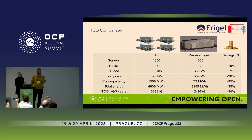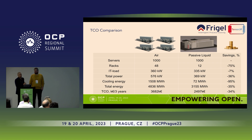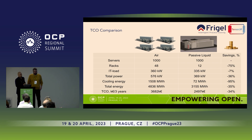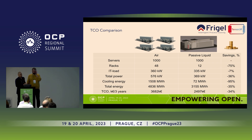Now we can make a comparison: 1,000 servers air-cooled versus 1,000 servers liquid-cooled. In the first case, we need four modular data centers; in the second case with liquid cooling, we need just one. So fewer racks, less IT load because less fan work is needed. Total power is reduced by 36%, requiring less UPS, fewer gensets, fewer transformers, and less energy equipment. Cooling energy is reduced by 95%, and overall total energy is reduced by 35%. Over three years, CAPEX is cheaper, OPEX is cheaper, and we save 1.2 million euros on 1,000 servers.